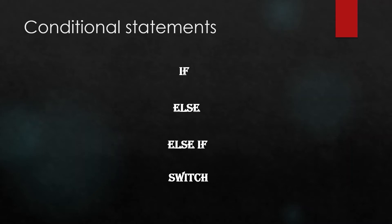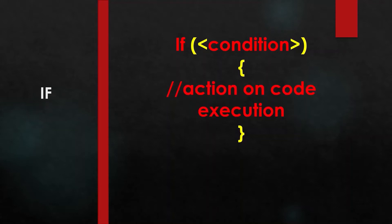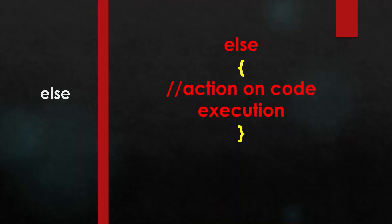Starting with the if condition, the syntax is: write the if keyword, then put the condition in brackets, then put opening and closing curly brackets, and within those write the code you want to execute when the condition is true. For else, write the else keyword, then opening and closing curly brackets. In the else statement you don't need to put any condition.